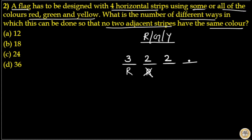In the fourth stripe you cannot choose the color of the third stripe, so you have two colors remaining — meaning you can fill the fourth stripe in two ways. So the total number of ways you can design this flag is 3 × 2 × 2 × 2, that is 24 ways.